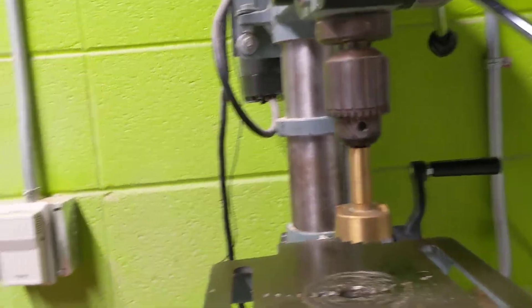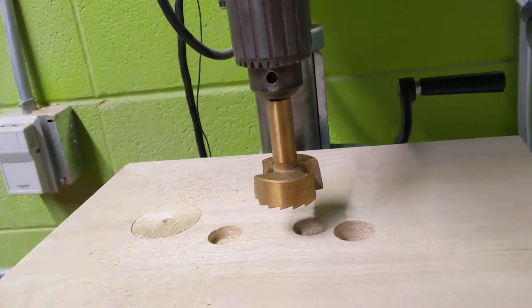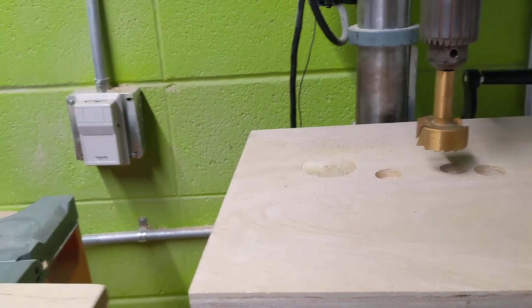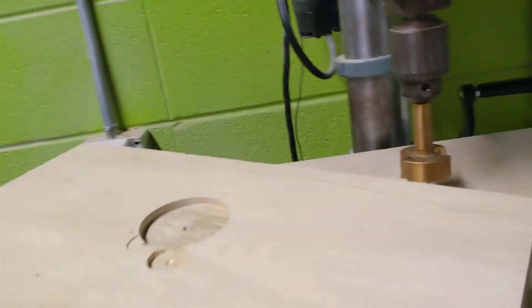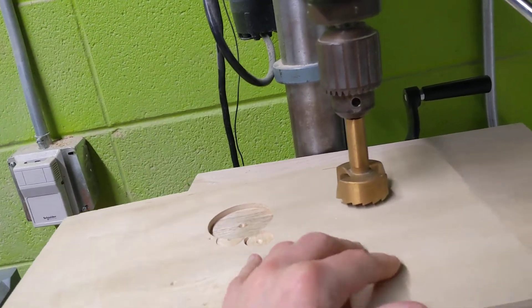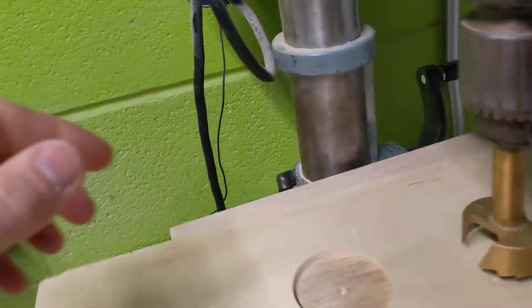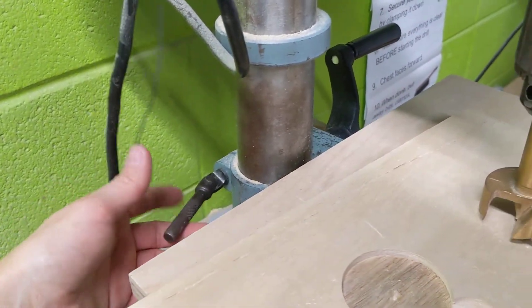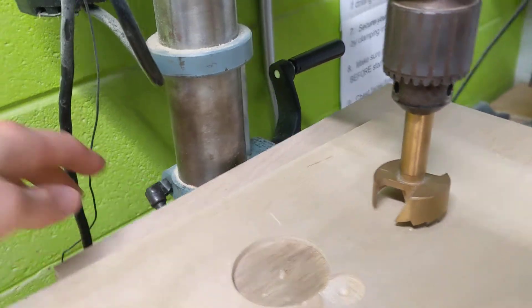I have a Forstner bit in here right now, so let's say this is my waste board I'm putting underneath and let's pretend this is the actual board that I want. I already set the table, so I loosened this, I cranked it up, and then I tightened it.